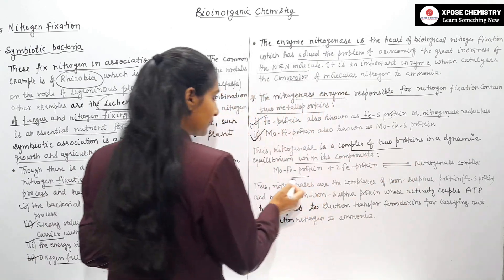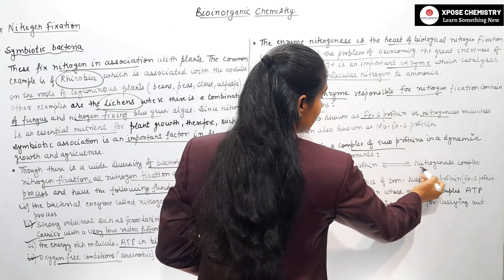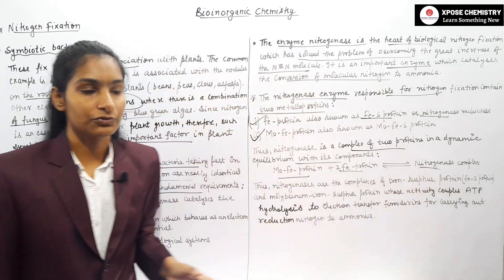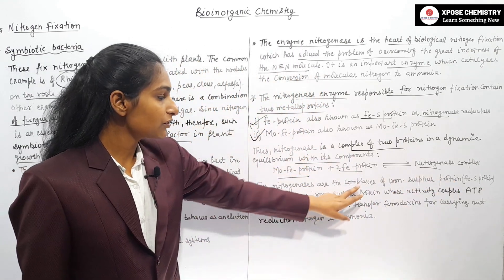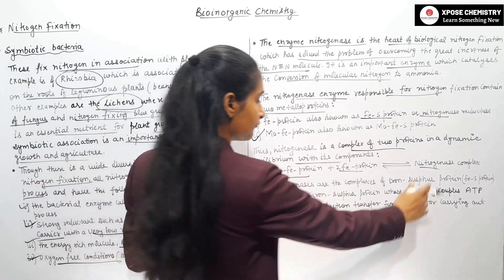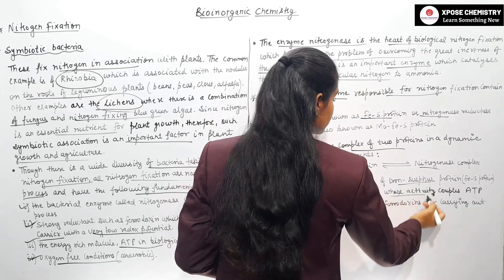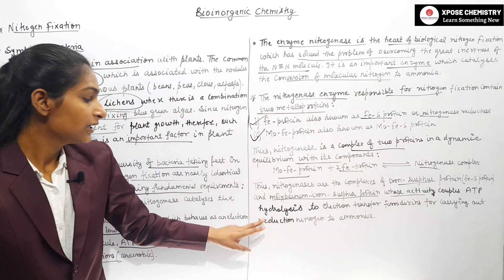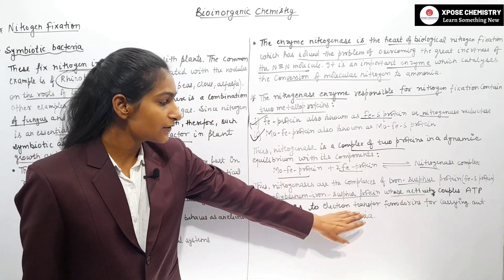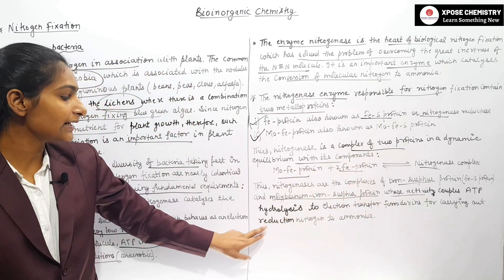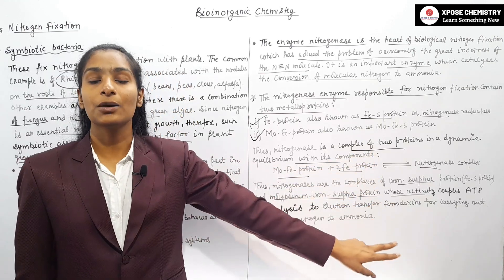Nitrogenase is complex with Fe-S protein and molybdenum iron-sulfur protein, which is coupled with ATP hydrolysis to carry out the electron transfer from ferredoxin for reduction of nitrogen to ammonia.